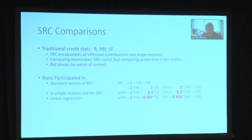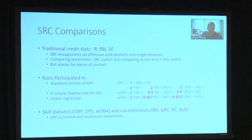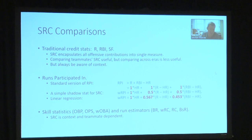In a given game the weighted RPI might not do well, because runs and RBIs don't capture things like advancing runners or stealing bases. SRC is very different from skill statistics and run estimators — all of those attempt to remove the player from context, whereas SRC is context and teammate dependent by design. It's trying to account for credit within the coalitional context of run scoring.